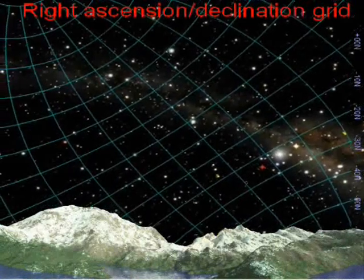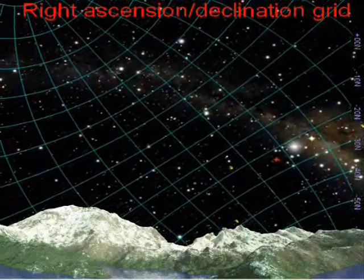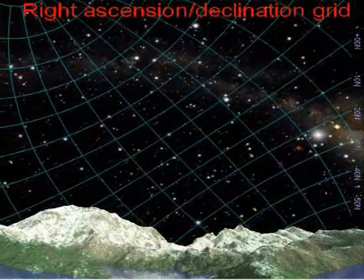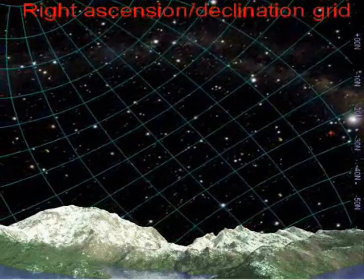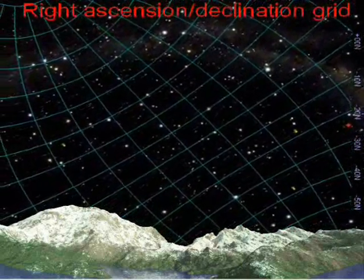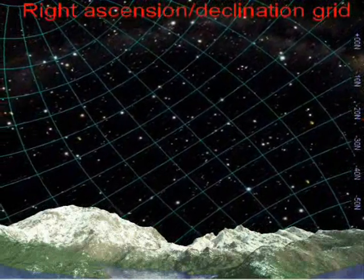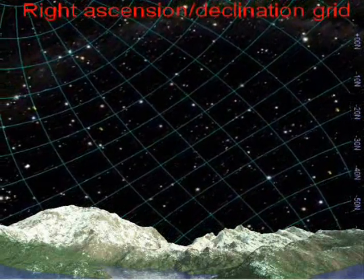Declination. The declination lines on the celestial sphere are similar to the latitude lines on Earth, ranging in value from minus 90 degrees to plus 90 degrees. The declination of an object is the angle measured from the celestial equator, along a meridian line through the object.